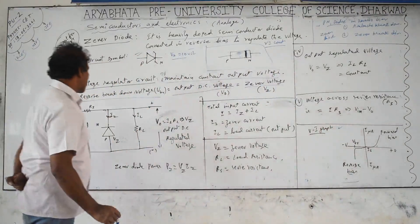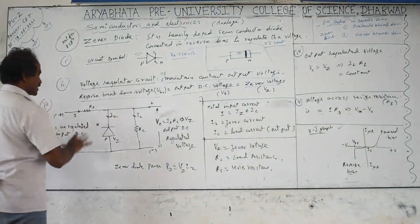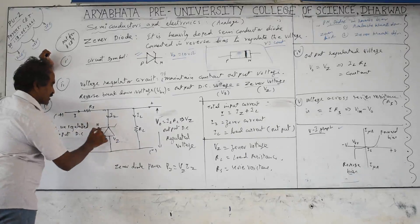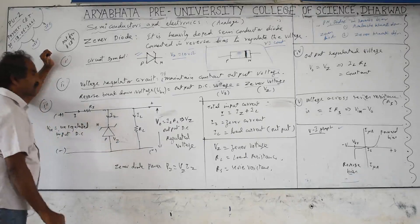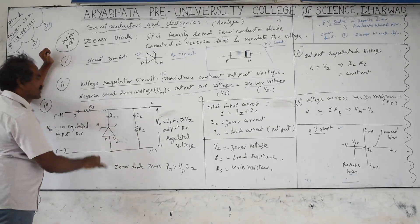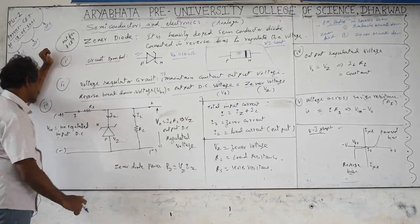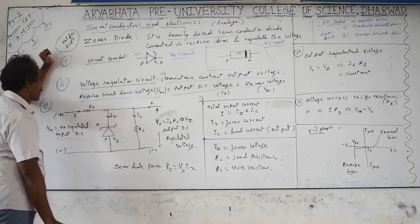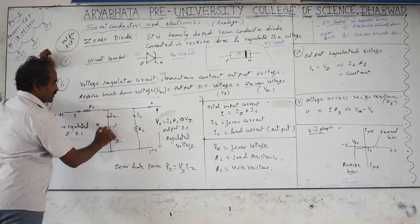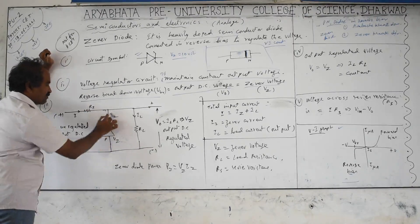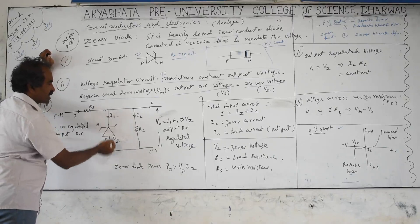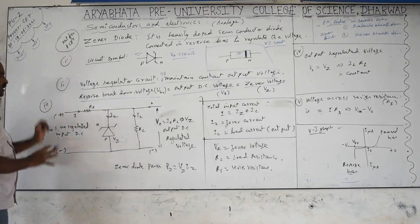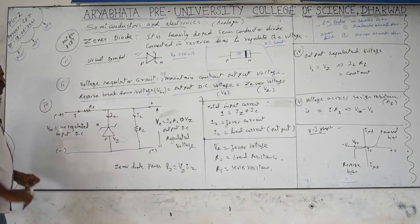In the voltage regulator circuit, the Zener diode is connected in reverse bias. A series resistance is required to protect the diode from large currents. The maximum current the diode can withstand is called the Zener current Iz, and the power the diode can withstand is Vz × Iz. The input is an unregulated (fluctuating) voltage — if electronic devices are connected to fluctuating voltages, they can be damaged.